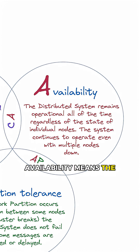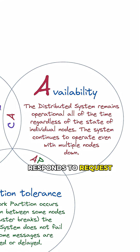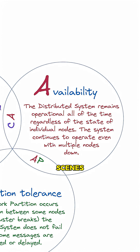Availability means the system always responds to requests. No matter what's happening behind the scenes, when you ask for data, you always get an answer.